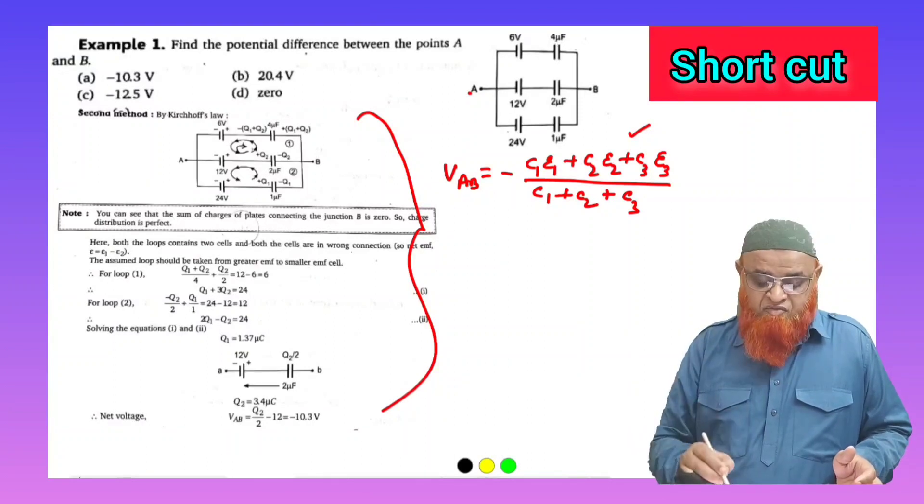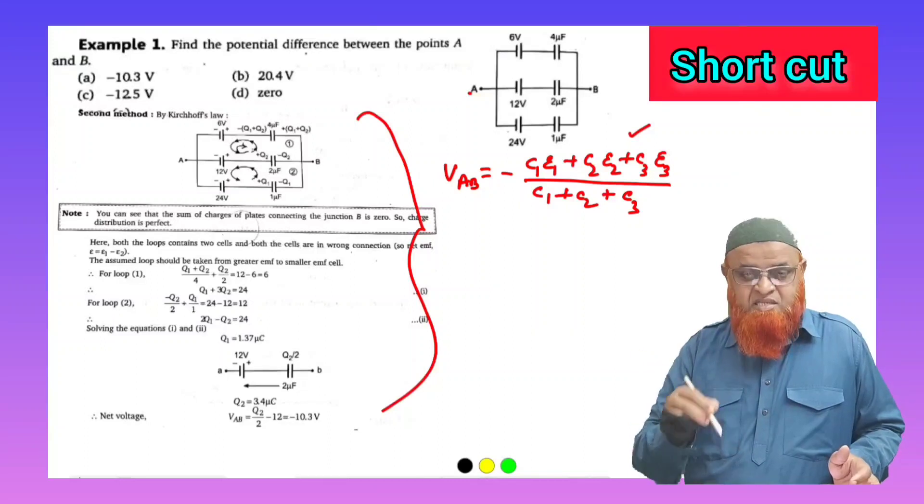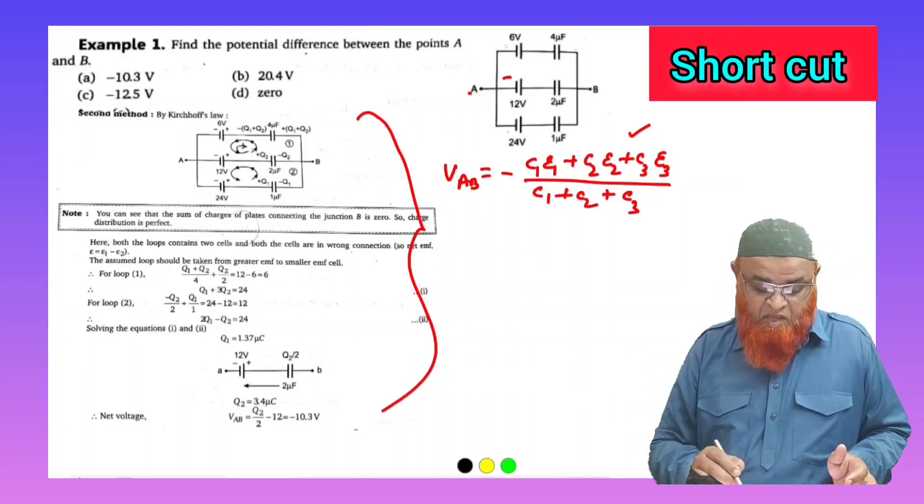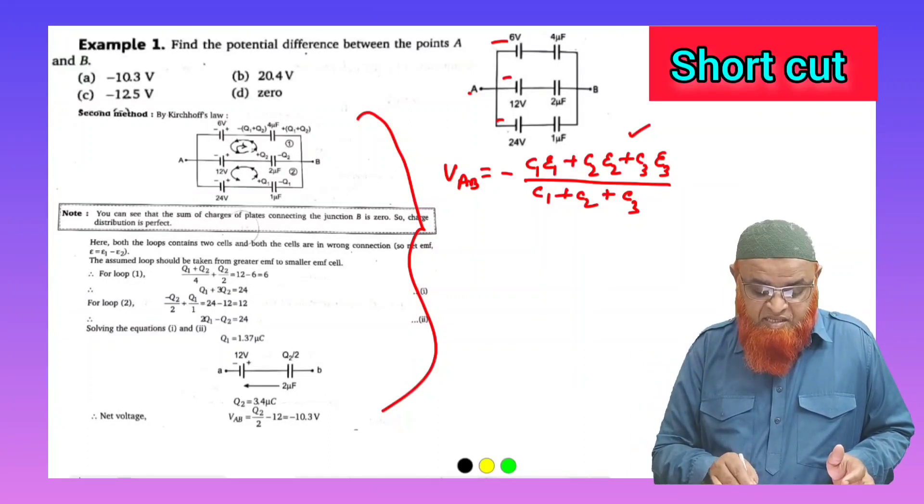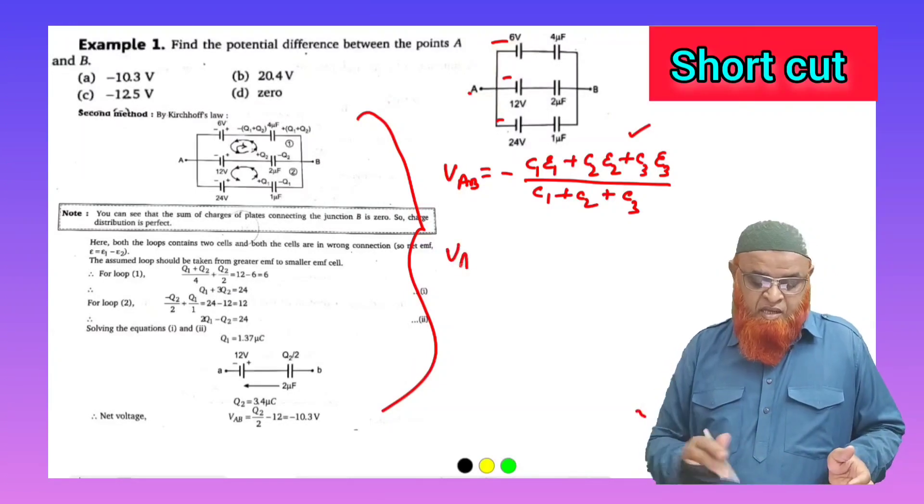For that, a shortcut formula is this formula: (c1·e1 + c2·e2 + c3·e3) / (c1 + c2 + c3). Okay, as here negative sign is there, so we have taken negative for the total solution.